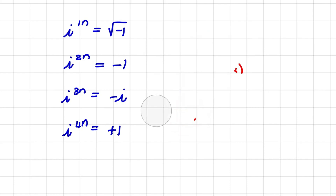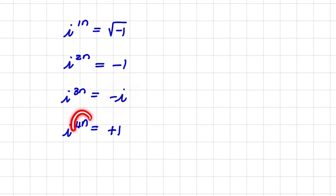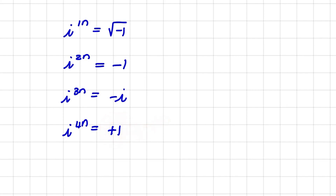Focusing on i: we can have a non-real solution, or a real solution of negative 1 when it's raised to the power of 2n. When raised to the power of 3n, we have a non-real solution again. And when raised to the power of 4n, we again have a real solution of positive 1.